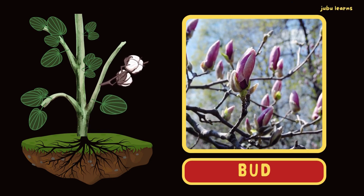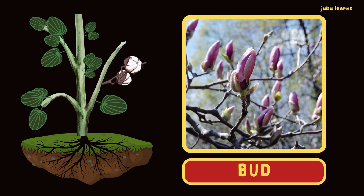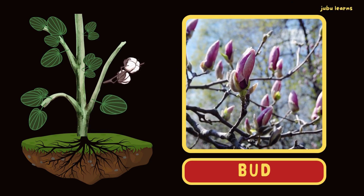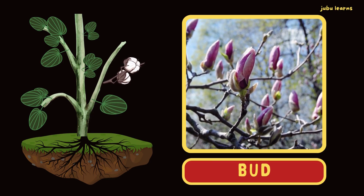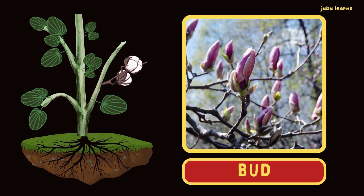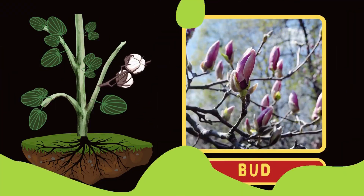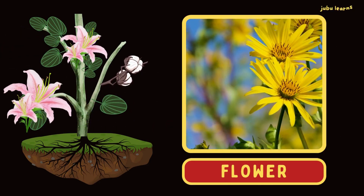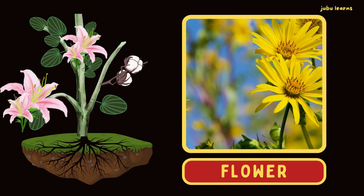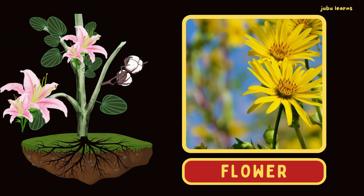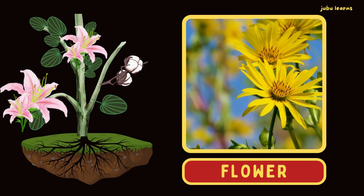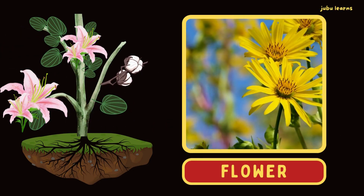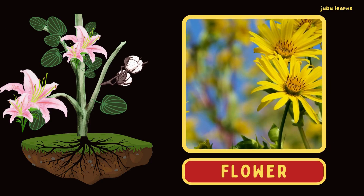Bud: they arise on the stem of the plants and develop into flowers. Flowers are the reproductive part of the plant.